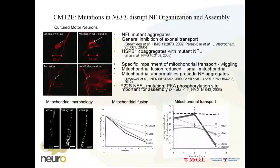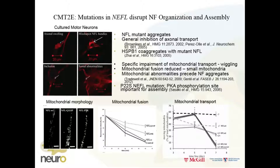What Benoit found was that there were mitochondrial changes well before we could see obvious neurofilament inclusions. The mitochondria became more rounded and smaller — this is an axon with long mitochondria, and in neurons expressing the mutants, we have these more rounded type mitochondria. He measured mitochondrial fusion, and fusion was inhibited. So perhaps they're just fragmenting but not able to come back together.